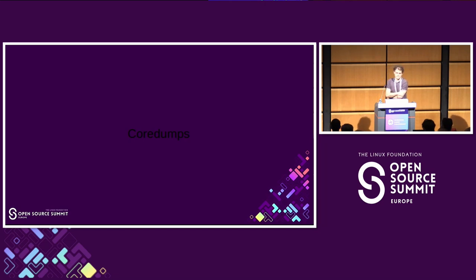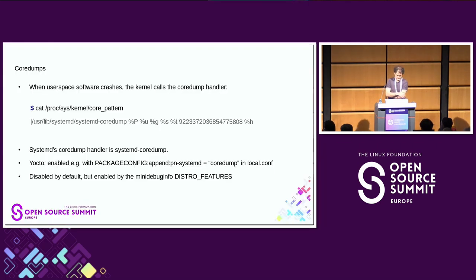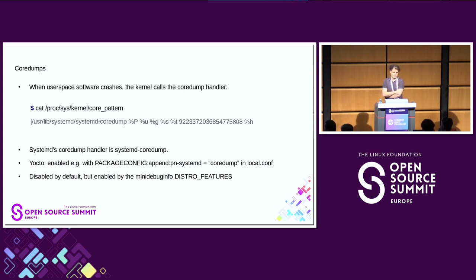Now let's talk about core dumps. Core dumps are useful in a use case where you have a crash which is not easy to reproduce — you don't have a clear way to reproduce it. Typically you would get a core dump from a tester or a customer and then you have to investigate. When a user space software crashes in Linux, the kernel calls the core dump handler if it's enabled.